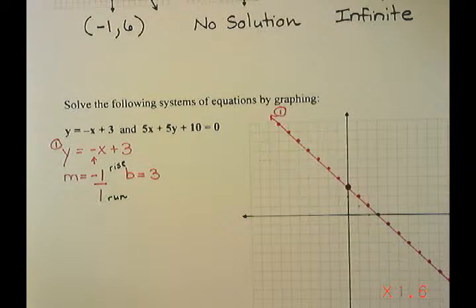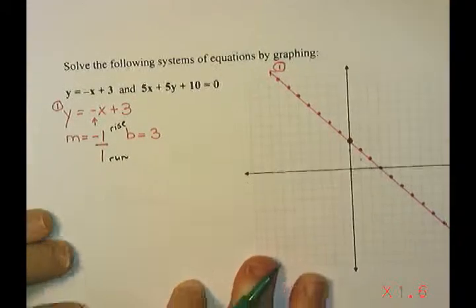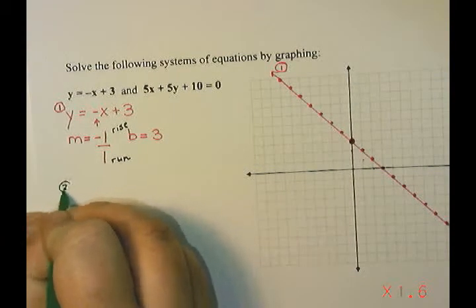And I'm going to label this number 1, so that I know which line that is. I'm then going to do the second line, so I have 5x plus 5y plus 10 equals 0. Call that number 2.